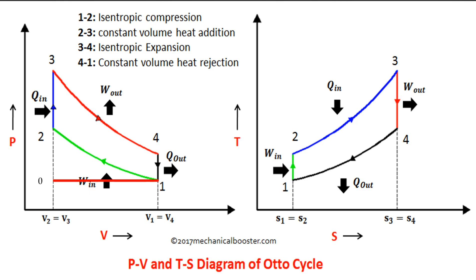Then process 4 to 1: heat is rejected from the air at constant volume while the piston is at BDC. Then the last process, 1 to 0: the mixture is released into the atmosphere. On the graph, the processes are: 1 to 2 isentropic compression, 2 to 3 constant volume heat addition, 3 to 4 isentropic expansion, and 4 to 1 constant volume heat rejection.